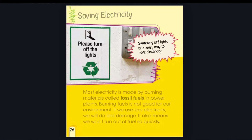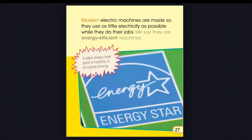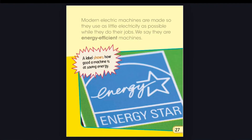Switching off lights is an easy way to save electricity. Modern electric machines are made so they use as little electricity as possible while they do their jobs. We say they are energy-efficient machines. A label shows how good a machine is at saving energy.